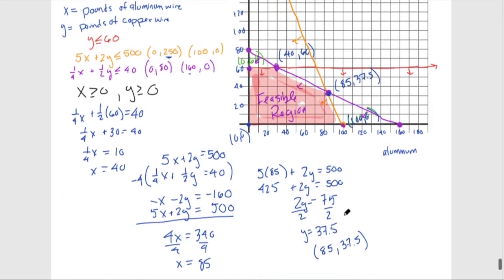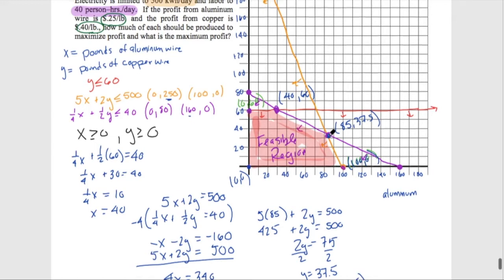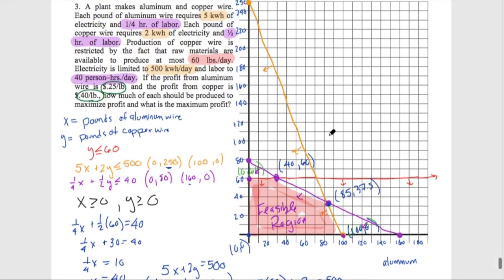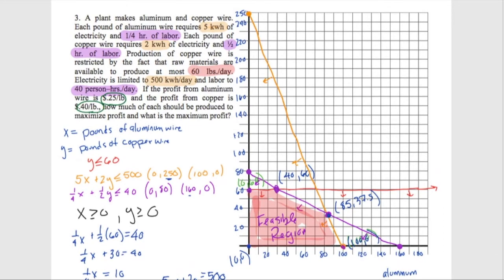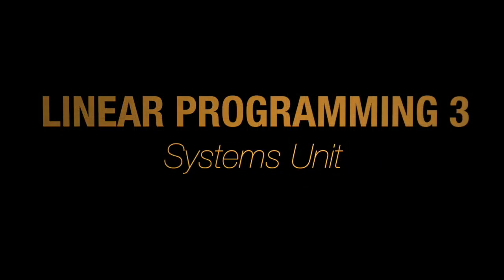So we really want to make 85 pounds of aluminum wire, 37.5 pounds of copper wire, and that will give us a profit of $36.25. So a lot going on here. We had to solve a system of equations to find the point of intersection, which turned out to be the maximum amount of aluminum and copper, the amount of aluminum and copper to maximize our profit. Feel free to continue watching the other examples for more help on linear programming.